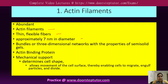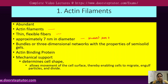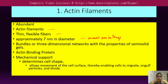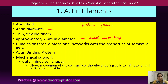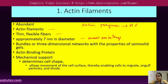The actin filament is one of the most abundant cytoskeletal elements in the cell. They are generally in the form of very thin and flexible fibers, approximately 7 nanometers in diameter and up to several micrometers in length. The actin filament is made up of actin monomers that polymerize to form the filament.